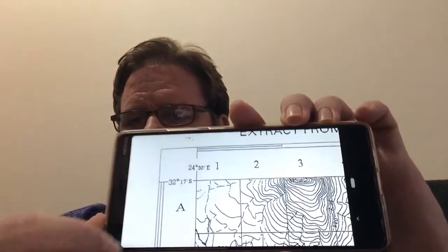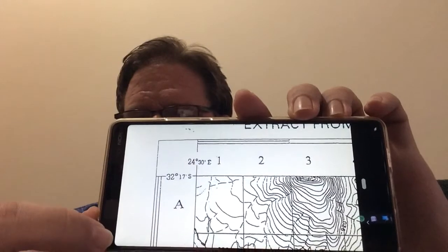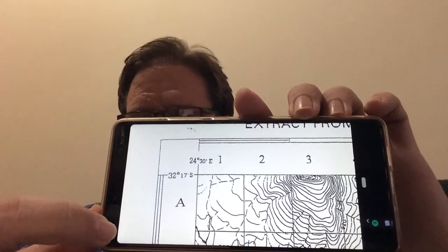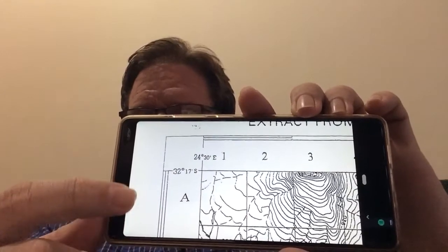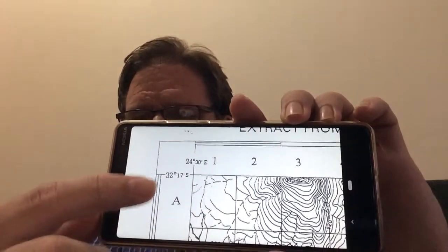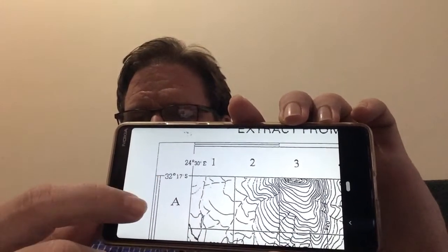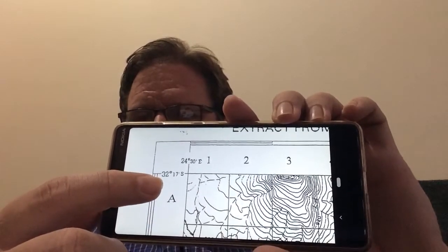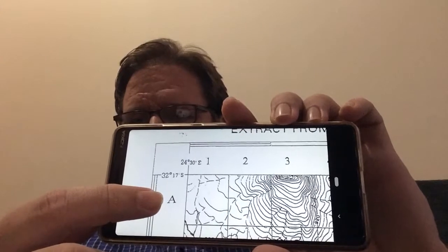And right in the top corner we'll get to see the latitude and longitude on the map. So because we are in South Africa, we are south of the equator. So 32 degrees south and 24 degrees east of the Greenwich Meridian.